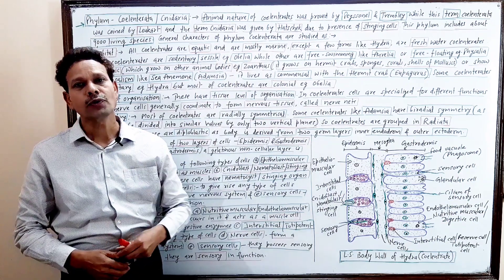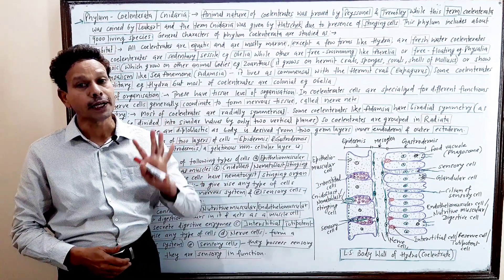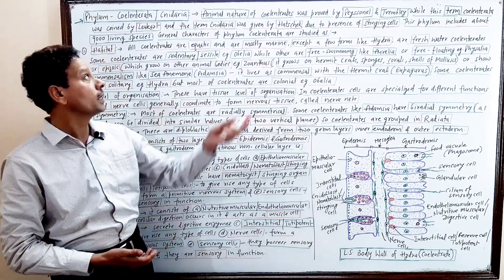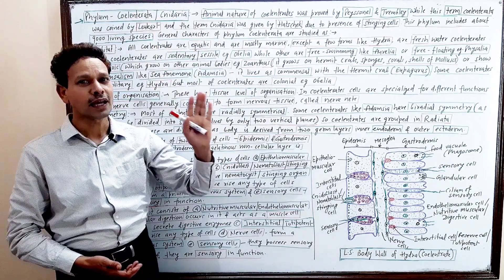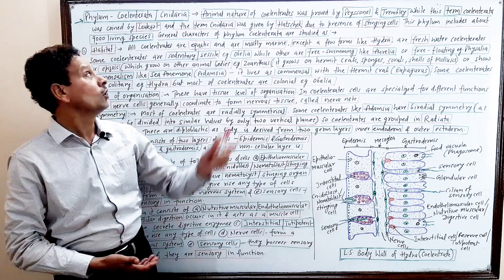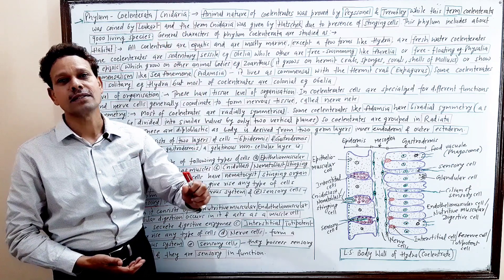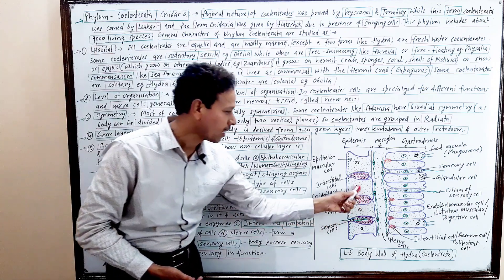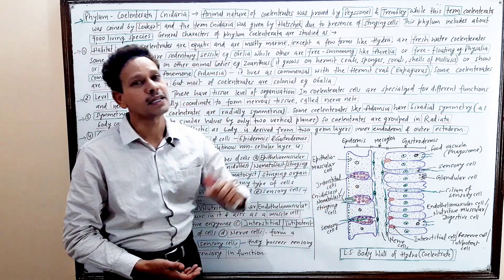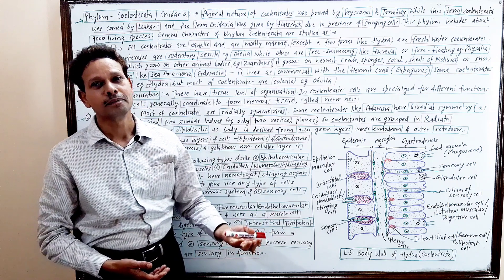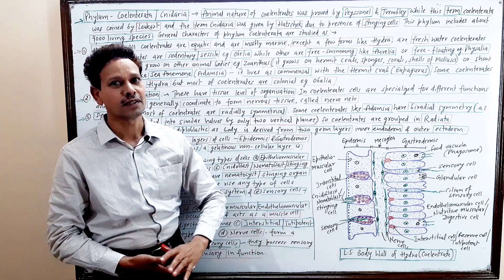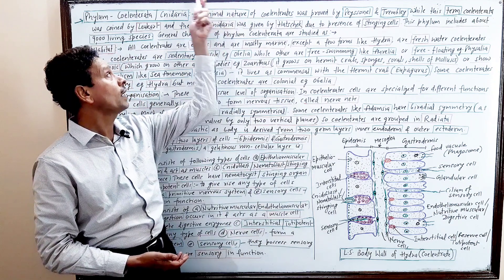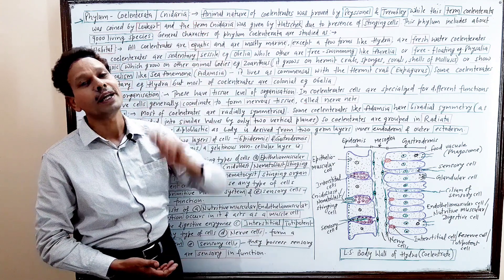Today we will discuss Phylum Coelenterata. Phylum Coelenterata means the animals having a sac-like body. These are also called Cnidarians. Phylum Cnidaria means these animals have special type of cells for defense — stinging cells, also called cnidoblasts or nematoblasts. This phylum is named Cnidaria because of these stinging cells.